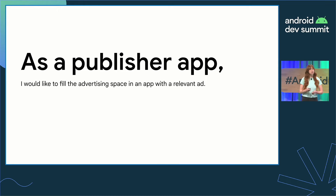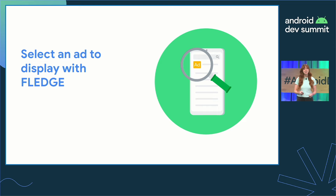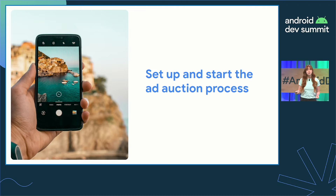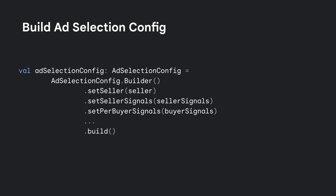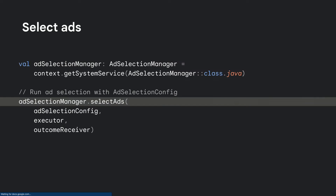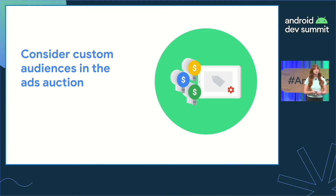Now that we have a custom audience on this device, a publisher app on the same device will want to consider the ads associated with that custom audience when choosing an ad to display. The publisher app's ad network SDK can use the Fledge API to call select ads. Let's say the publisher app is a travel guide app that wants to display ads while the user researches attractions, landmarks, and restaurants. The travel guide's ad network SDK will start by building an ad selection config to set up the auction parameters. The builder can be used to set variables for ad selection, passing signals relevant to the advertising slot — for example, what kind of food the user likes. After creating the builder, instantiate the ad selection manager, then use the config in the call to select ads. This will start an auction process that decides which ad will be selected to be displayed in the travel guide app. The ads considered will come from the custom audiences present on the device — in this case, the families of children custom audience from the restaurant advertiser app.